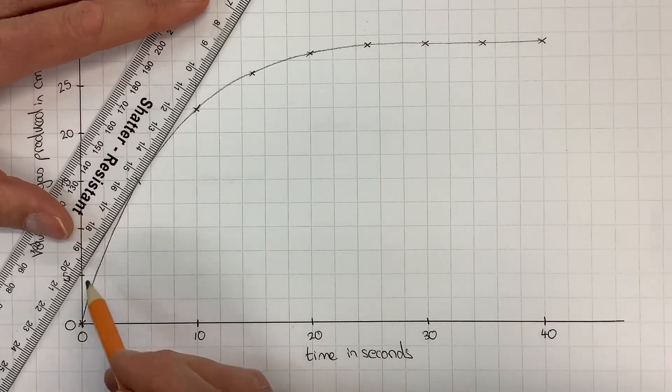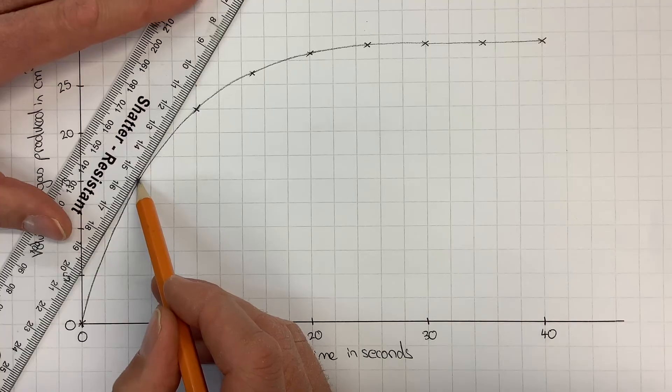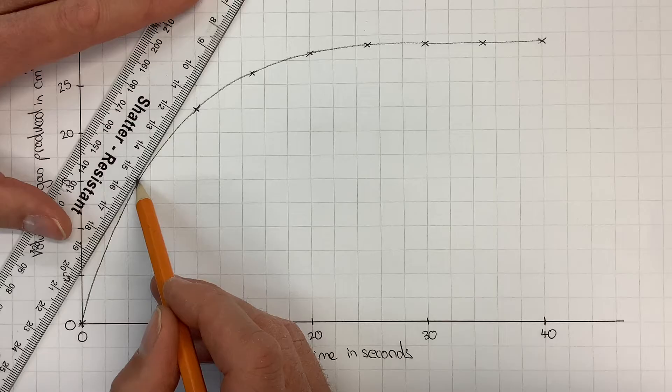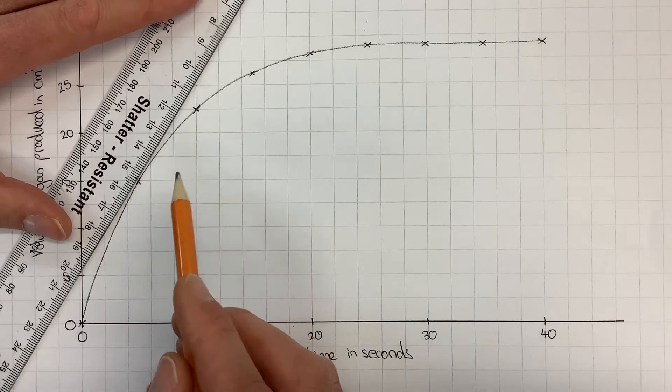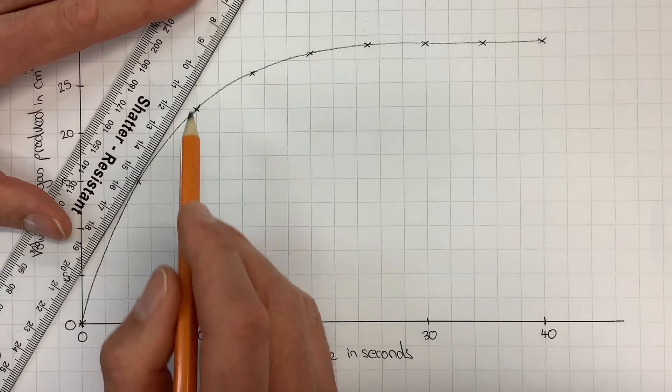I've got to adjust the ruler so that it touches the line just at that point of five seconds because I want the rate of reaction at five seconds.